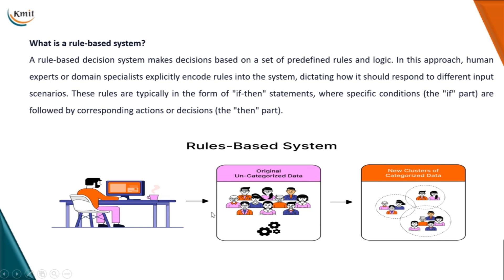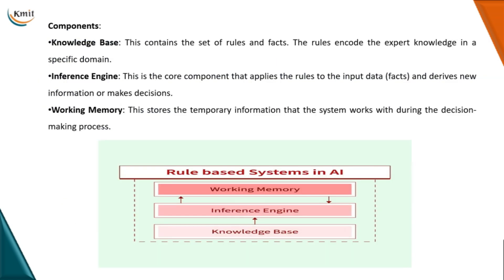As you can see in the figure, when categorizing people, a human expert decides the clusters of data. Depending on the gender, age, or whatever criteria the expert provides, the classification would be done into clusters. When we talk about the components of rule-based systems, there are three important components: the knowledge base, which is given to the inference engine, and then from the inference engine it goes back to the working memory.